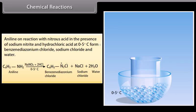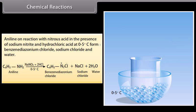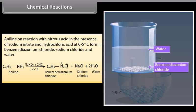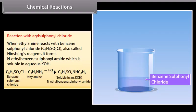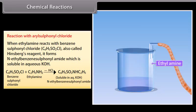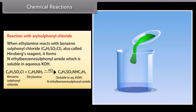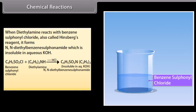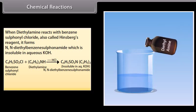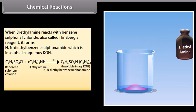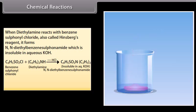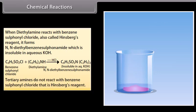Aniline, on reaction with nitrous acid (sodium nitrite and hydrochloric acid) at 0–5°C, forms benzene diazonium chloride, sodium chloride, and water. Hinsberg's reaction: When ethylamine reacts with benzene sulfonyl chloride (Hinsberg's reagent), it forms N-ethylbenzenesulfonamide, which is soluble in aqueous KOH. Diethylamine also reacts with benzene sulfonyl chloride. Tertiary amines do not react with benzene sulfonyl chloride.